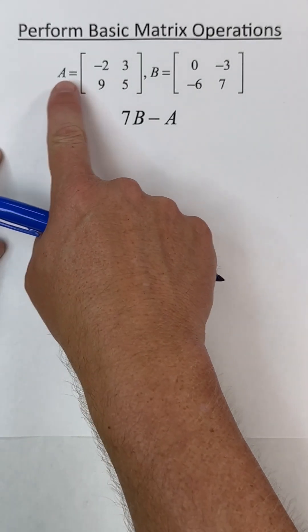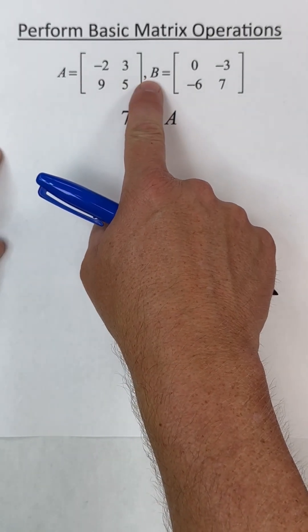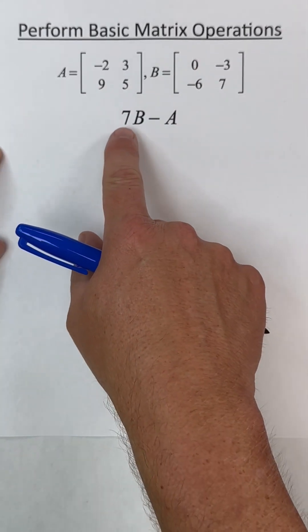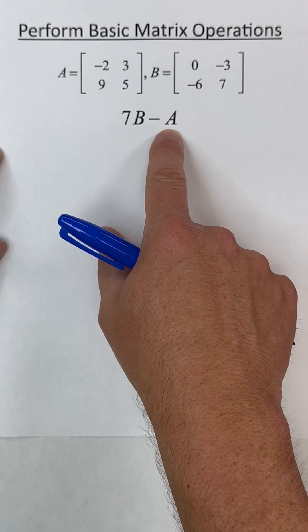All right, here we have a couple of matrices, A and B. Both of them are two by two matrices, two rows, two columns. We're asked to compute 7B minus A.